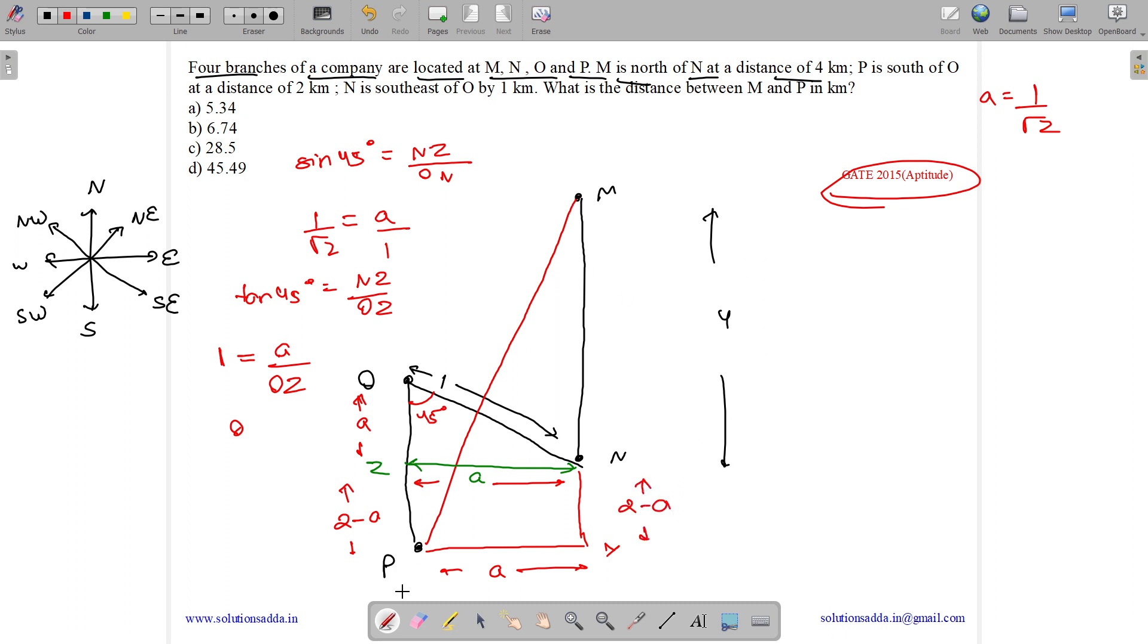Now applying Pythagoras theorem in triangle MPY. We get MP square equals to MY square plus PY square. So what is MP square? It's MY which is MN plus NY. What is MN? It's 4 plus NY which is 2 minus A whole square plus PY square. PY is A, so A square. So MP square equals to 6 minus A whole square plus A square. It's A square plus 36 minus 12A plus A square.